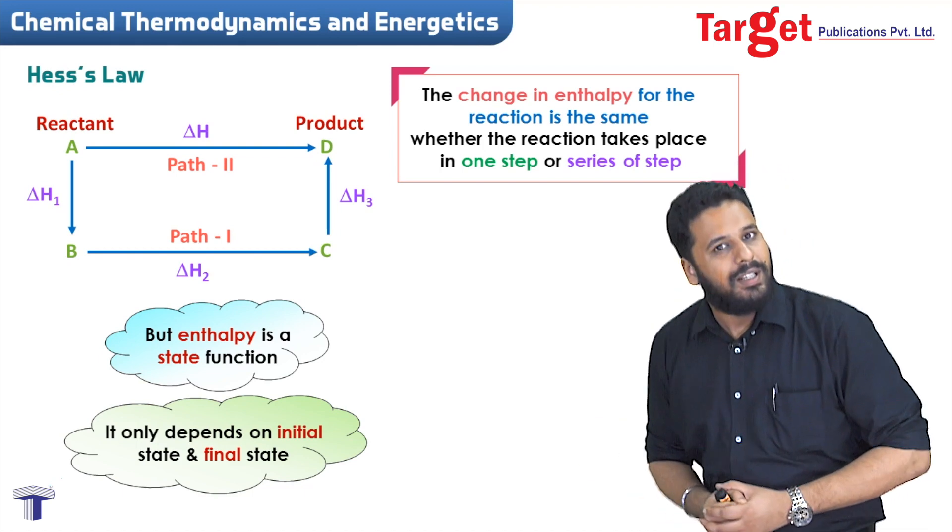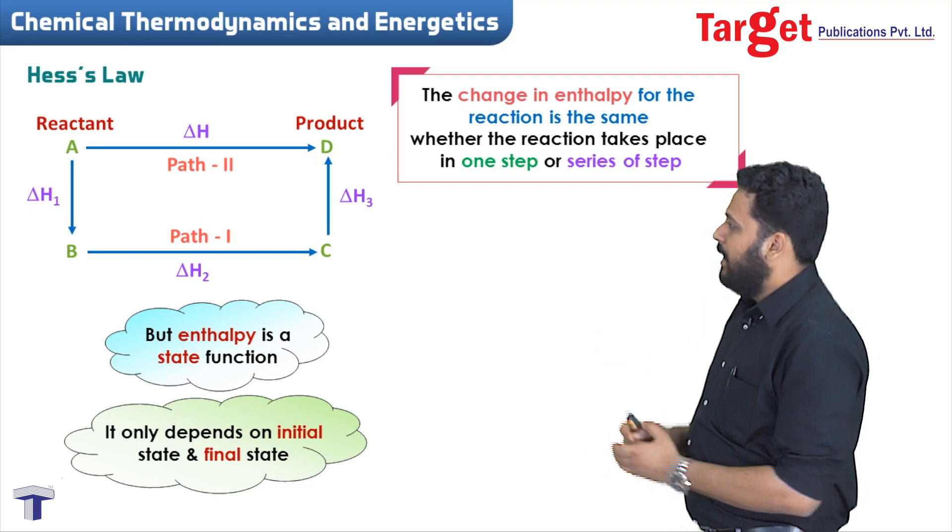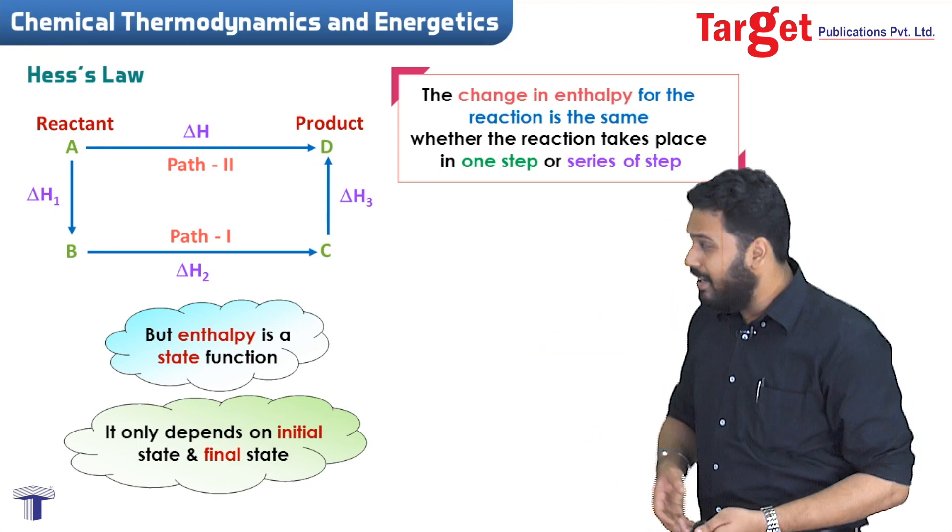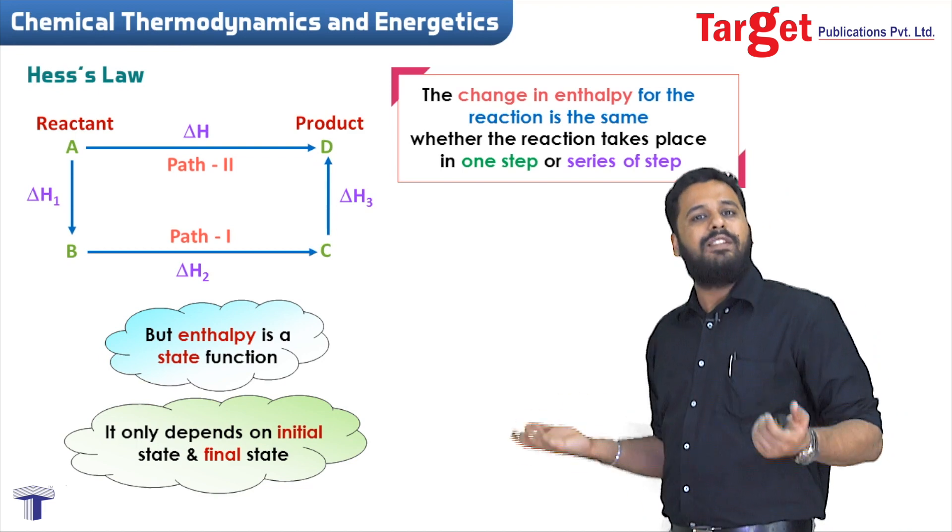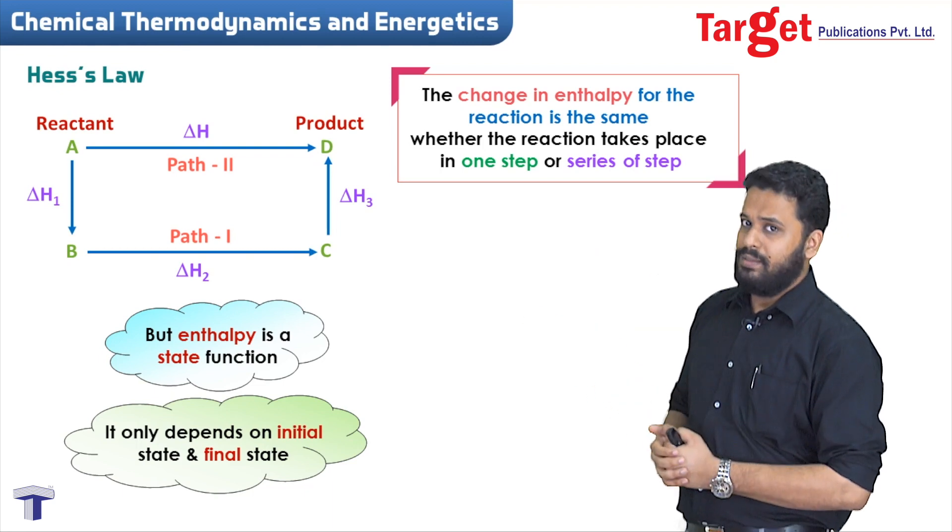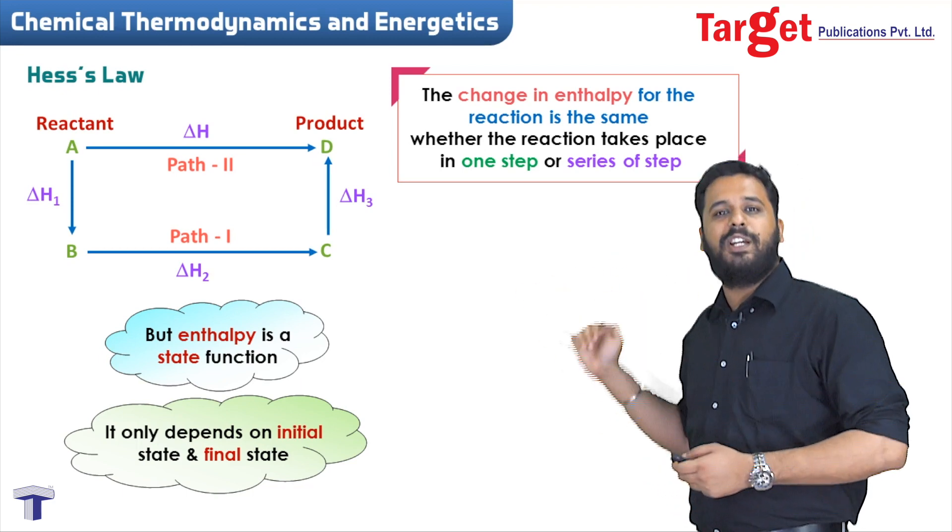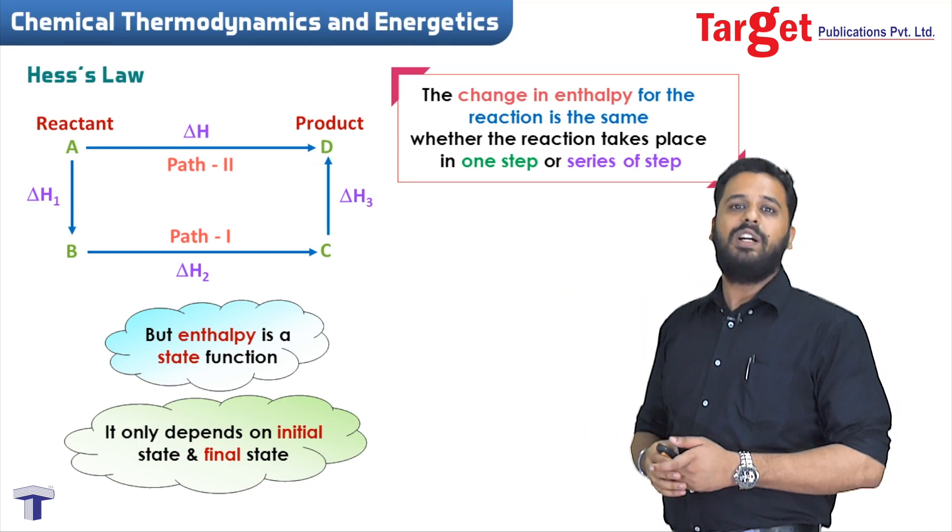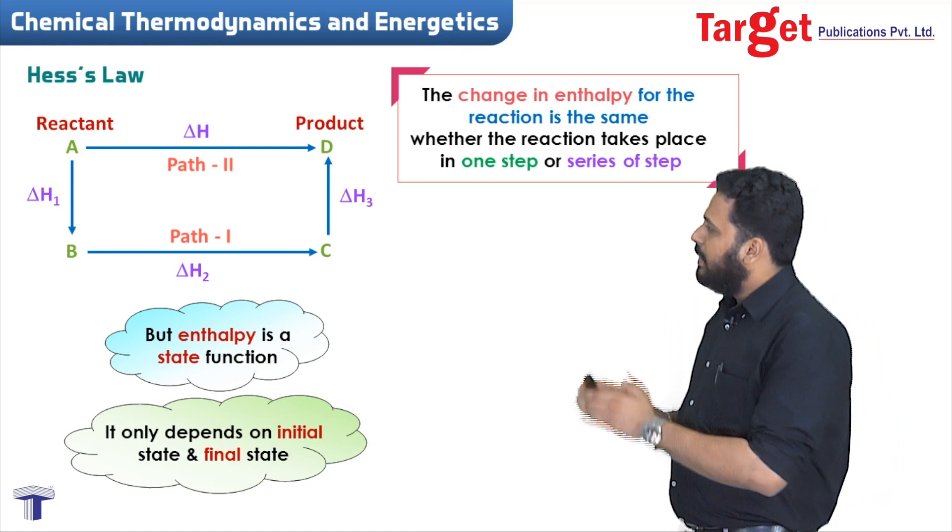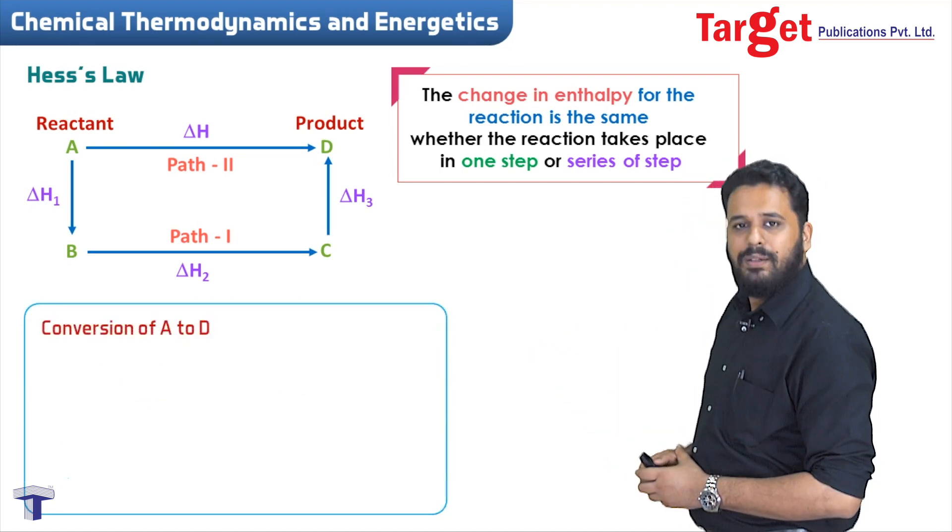You might say 'we already know this' because this is exactly how you define a state function - it doesn't depend on the path, only on initial and final state. And I will say yes, you are right. It is that simple. Enthalpy is a state function which we've already studied, so it doesn't depend on the path. Whether the reaction happens in one step or series of steps, enthalpy doesn't change.